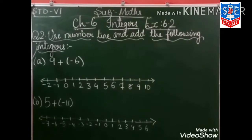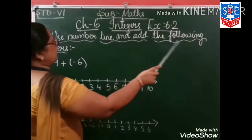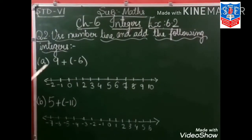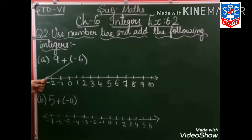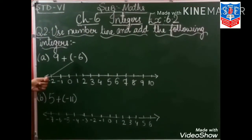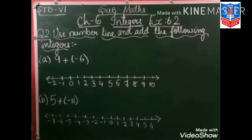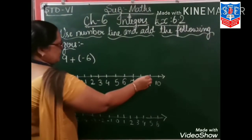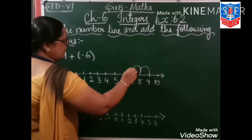Question number 2: use the number line and add the following integers. Now 9 plus minus 6. See, this is minus 6, that means we will move to the left side. So from 9, you move 6 steps to the left.